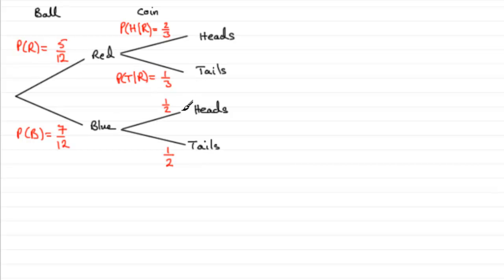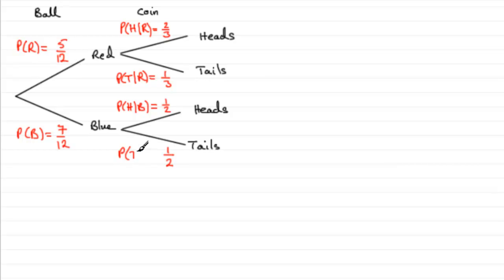For this one, this will be the probability of getting a head given that I drew a blue ball. And here, this will be the probability of getting tails given that I drew a blue ball.